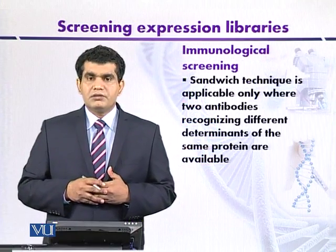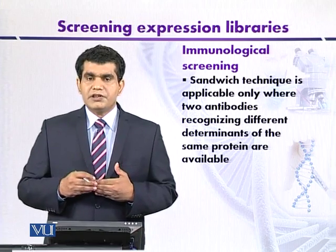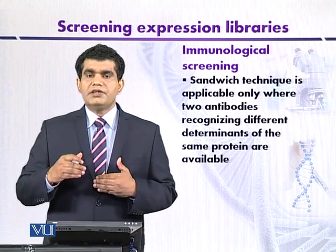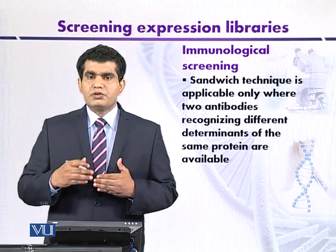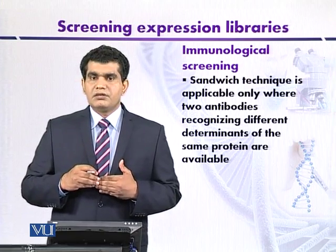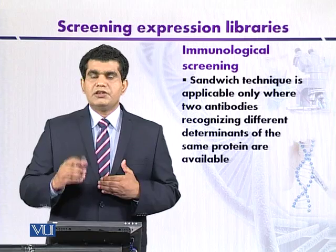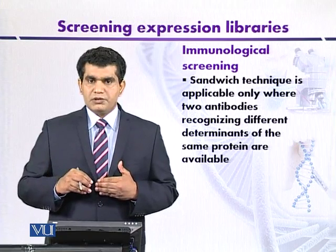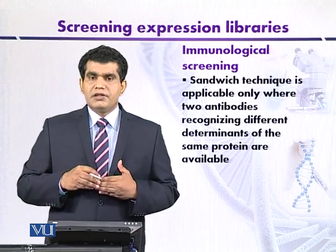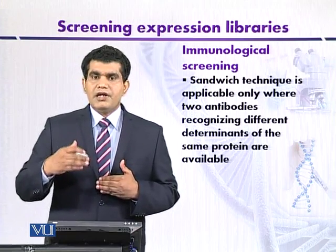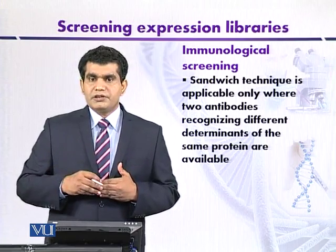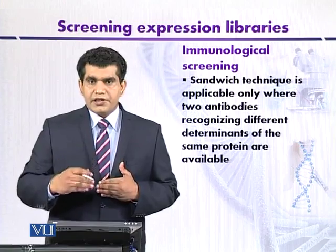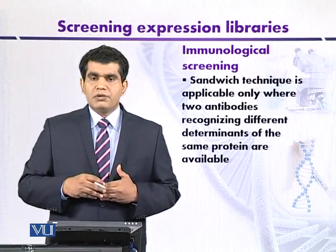In immunological screening, the method uses a sandwich technique where the first antibody is bound to a polyvinyl sheet and the secondary radiolabeled antibody is then applied. For the sandwich technique, the target protein must contain two antigenic determinants — one for the first antibody and one for the radiolabeled antibody. Even if fusion proteins are present, the two proteins must contain antigenic determinants or epitopes for their screening to be possible. This is the basic technique for screening or detecting target proteins using immunological screening.